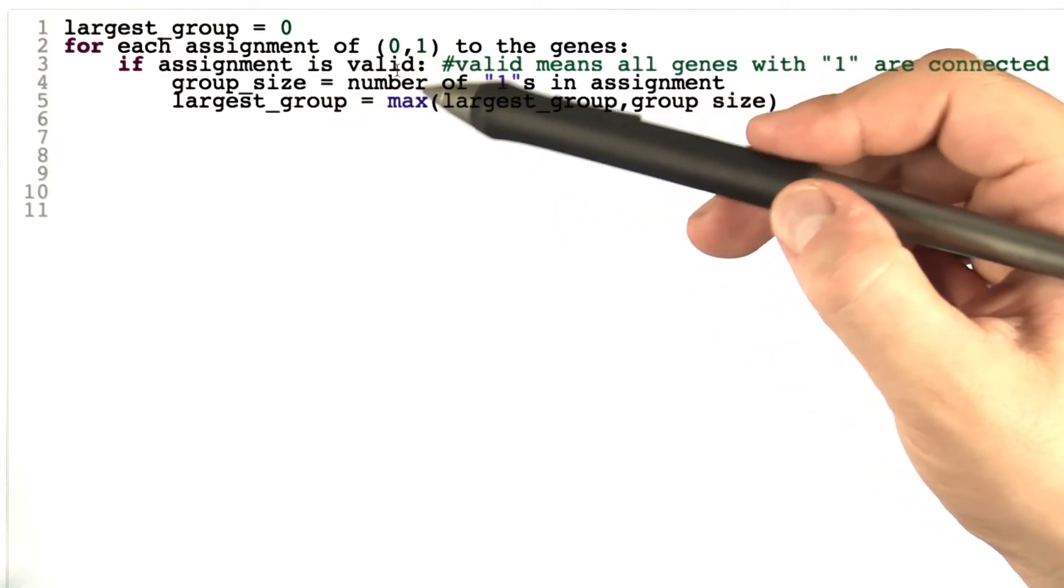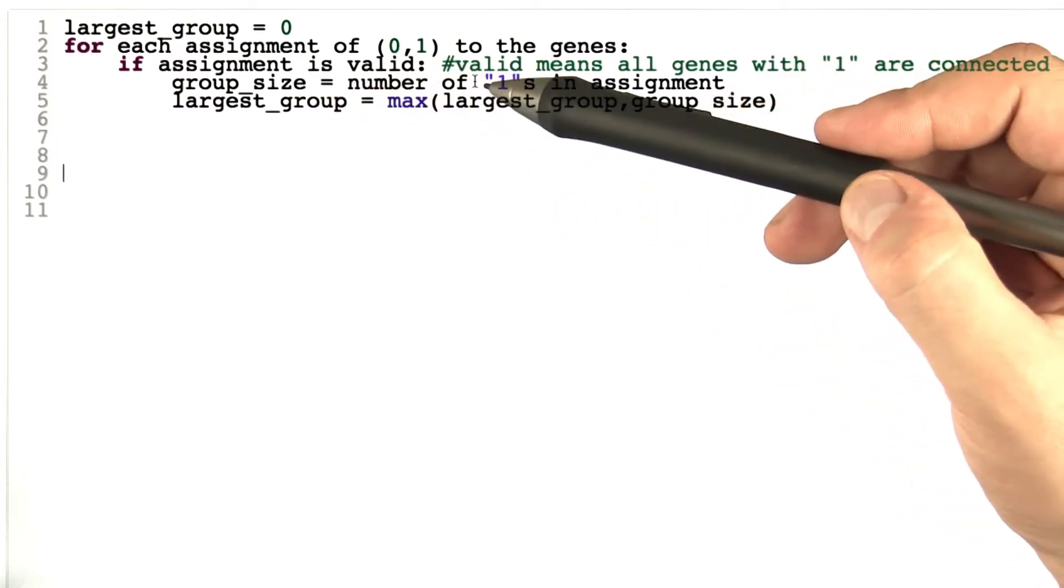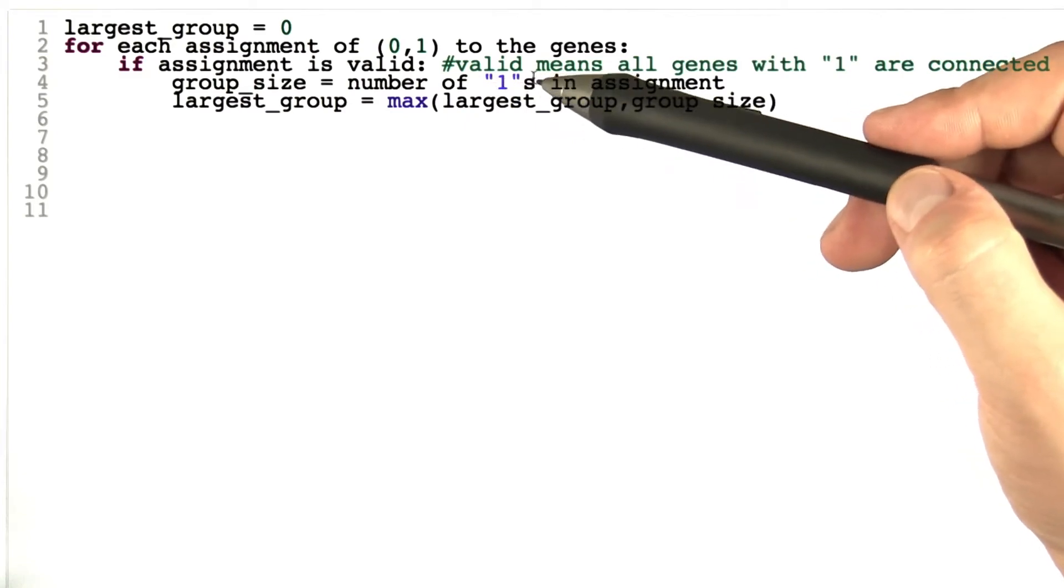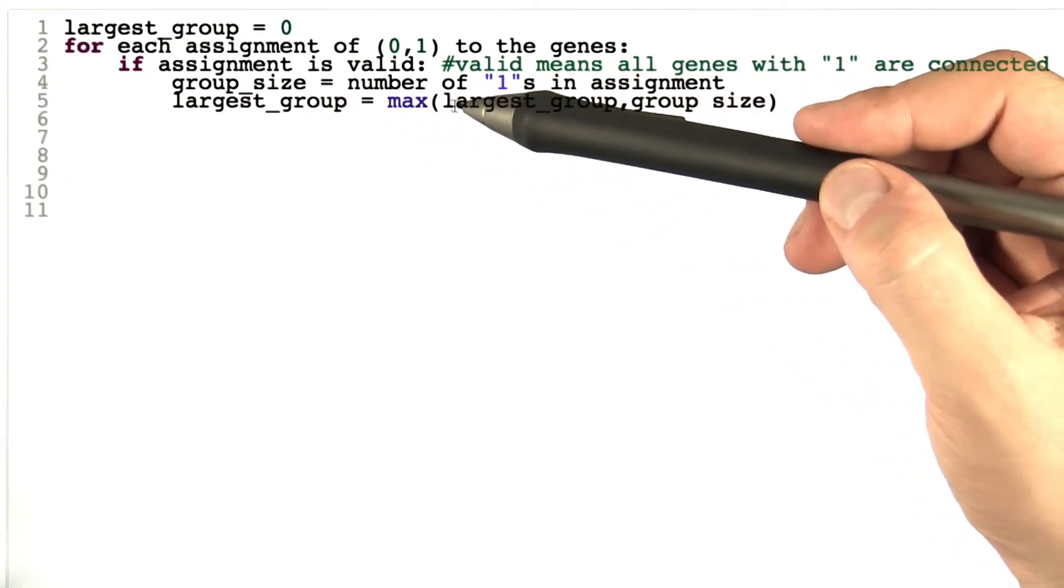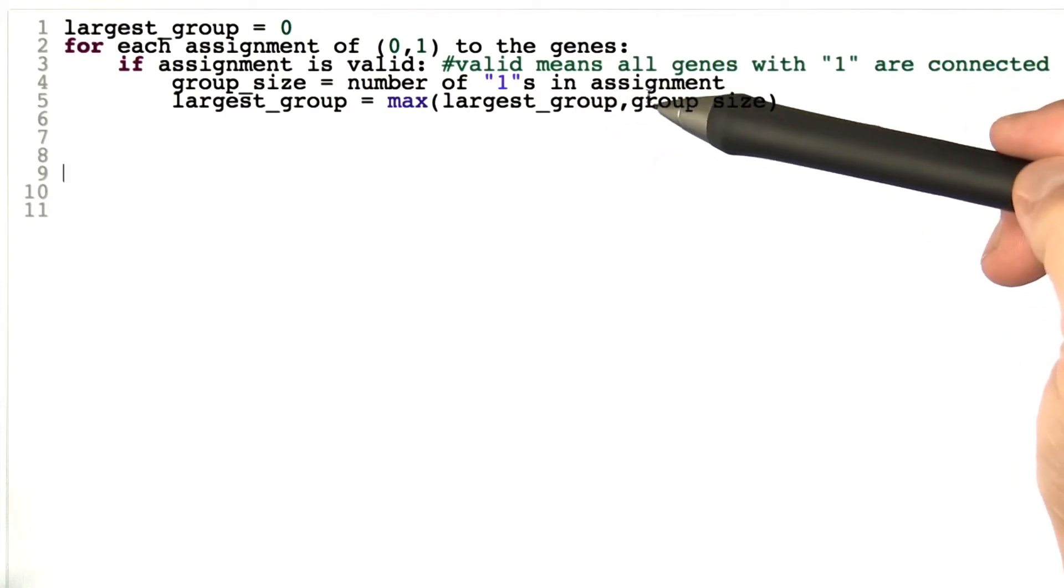If that is the case, then the size of that group is again the sum of the number of genes where we have assigned a 1. And the largest group is the maximum of the largest group we have found so far and the size of the new group that we have just found.